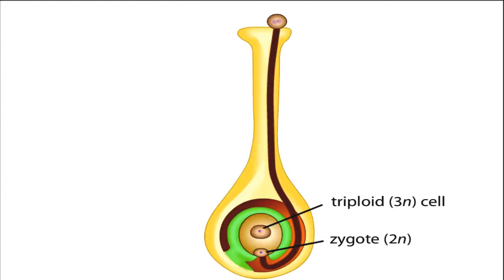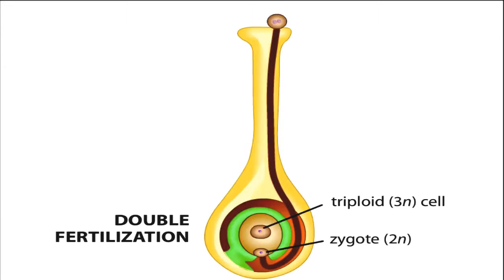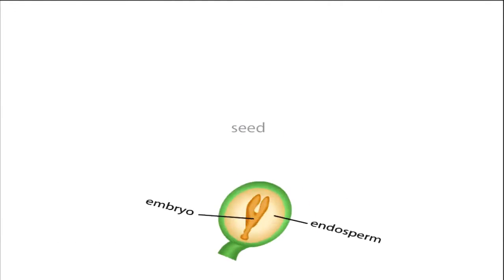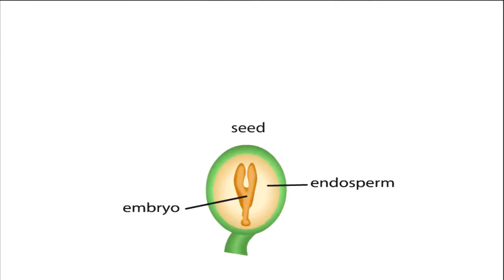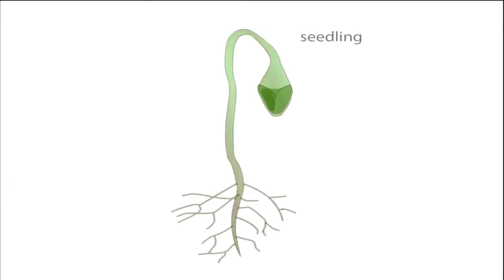The fertilization of both the egg cell and the central cell is called double fertilization, a hallmark of the life cycle of angiosperms. The zygote, which begins the next sporophyte generation, develops into the embryo, while the triploid cell develops into the nutritive endosperm of the seed. The seed germinates, and when the sporophyte matures, the life cycle begins again.